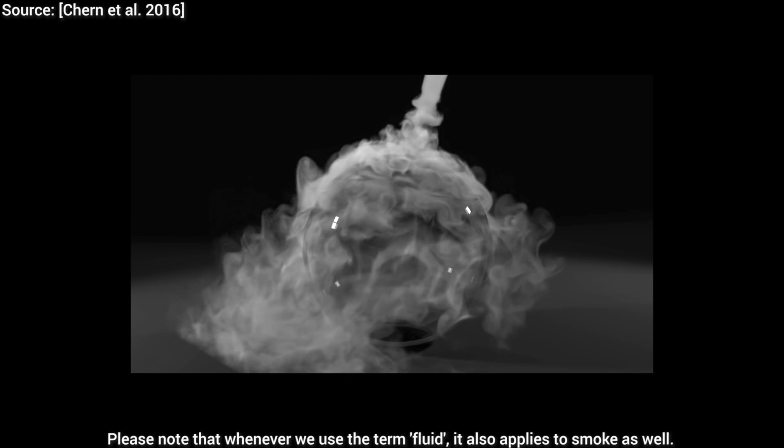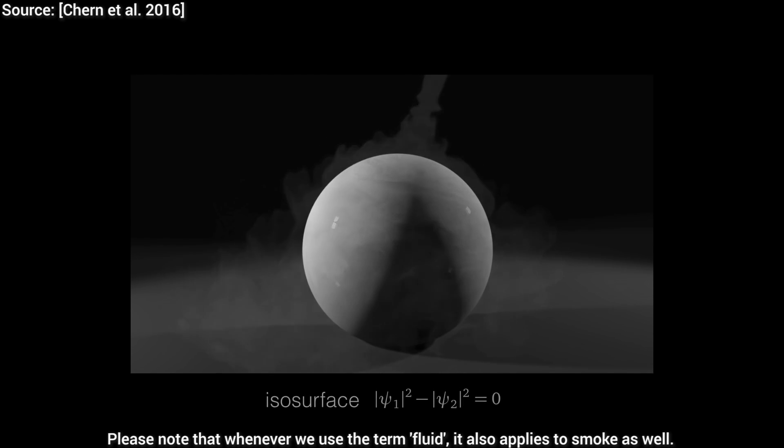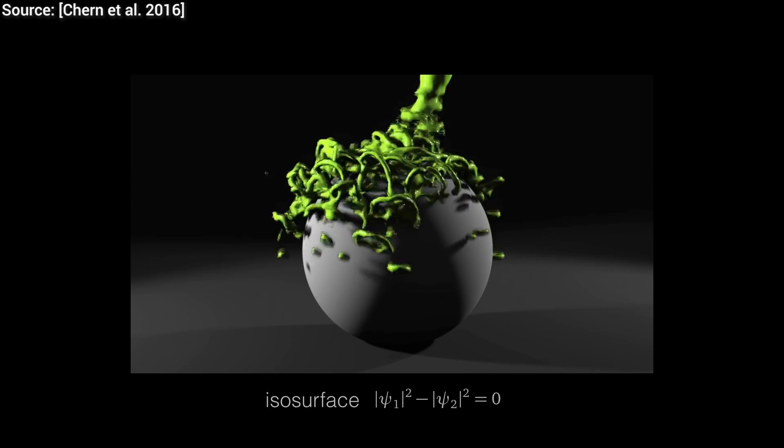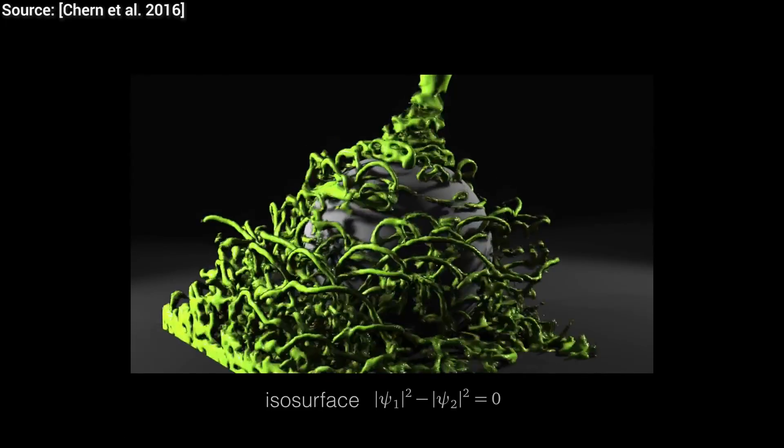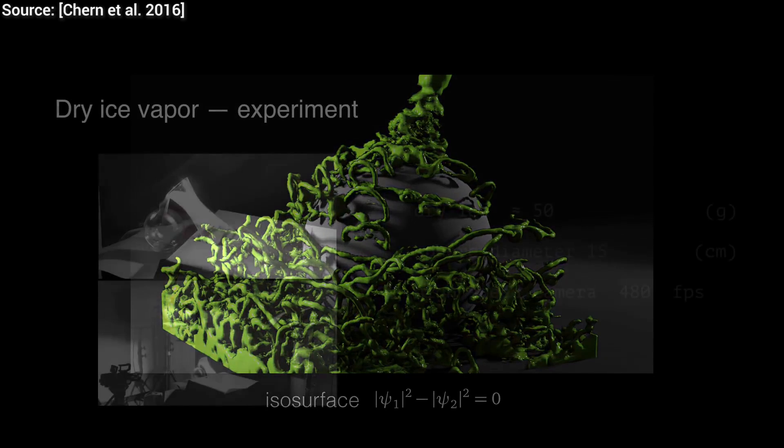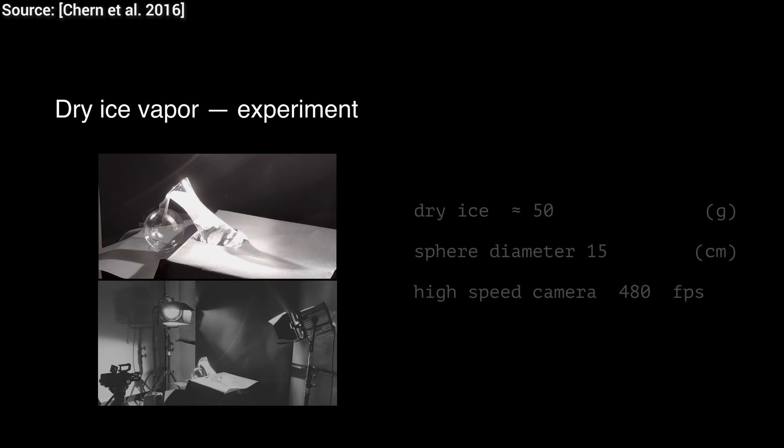Before we dive into what these terms mean, I'd like to note that we have closed captions available for this series that you can turn on by clicking the CC button at the bottom of the player. With that out of the way, the Eulerian technique means that we have a fixed grid and the measurement happens in the grid points only.